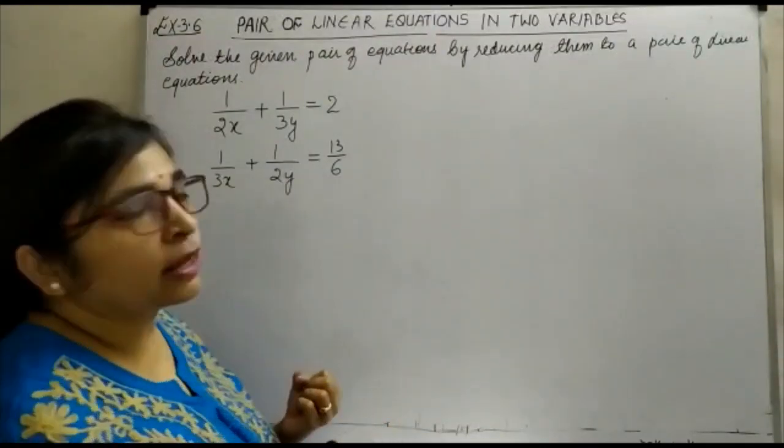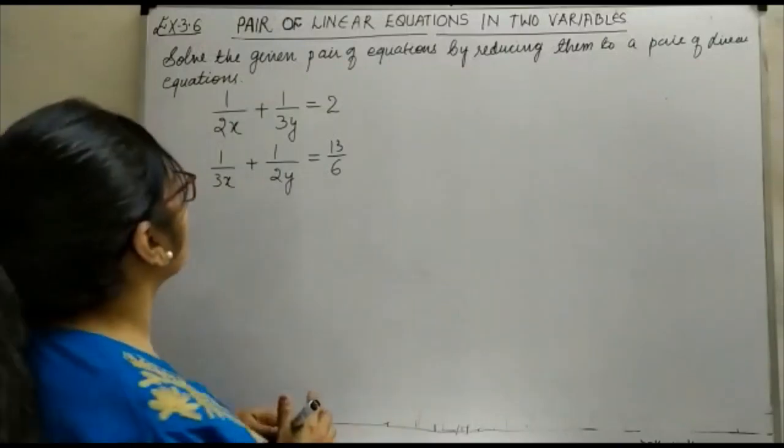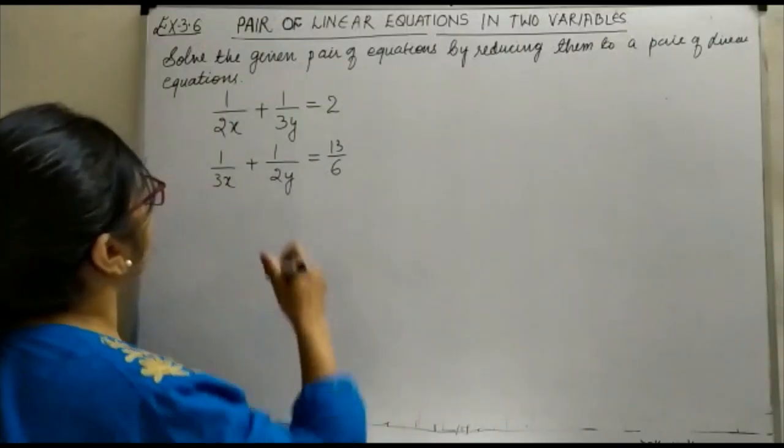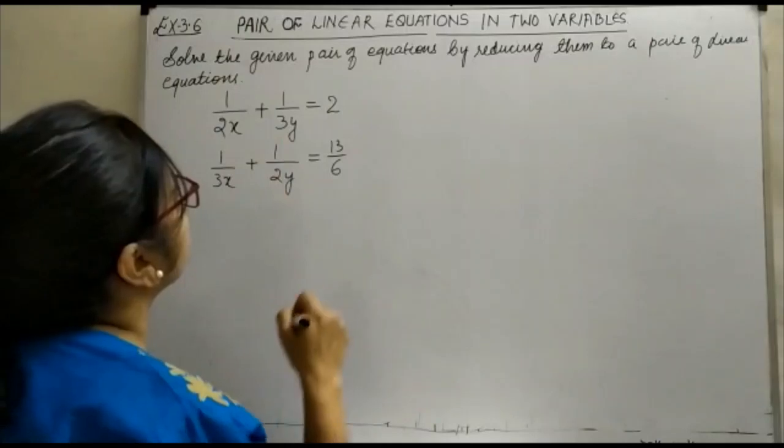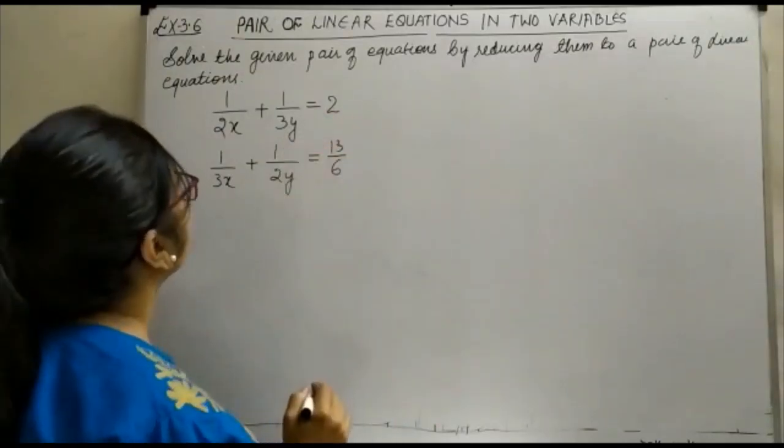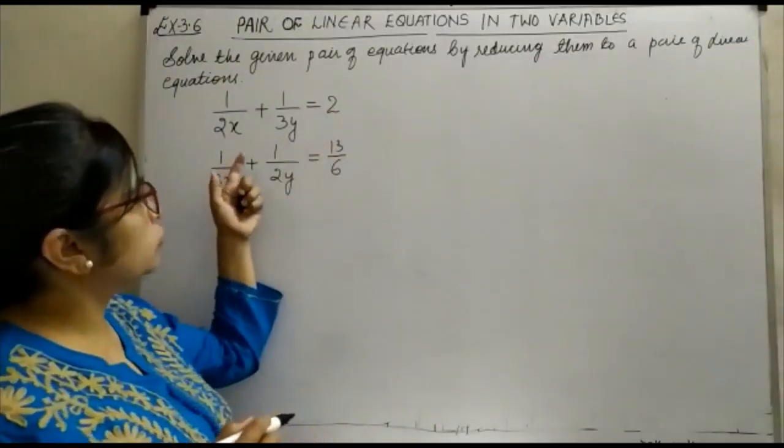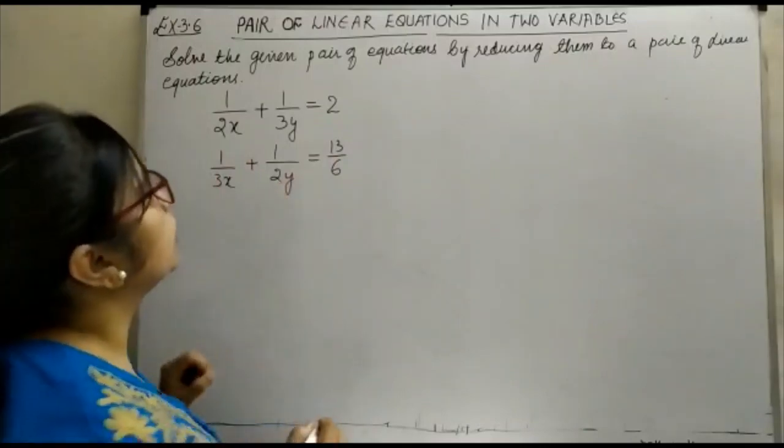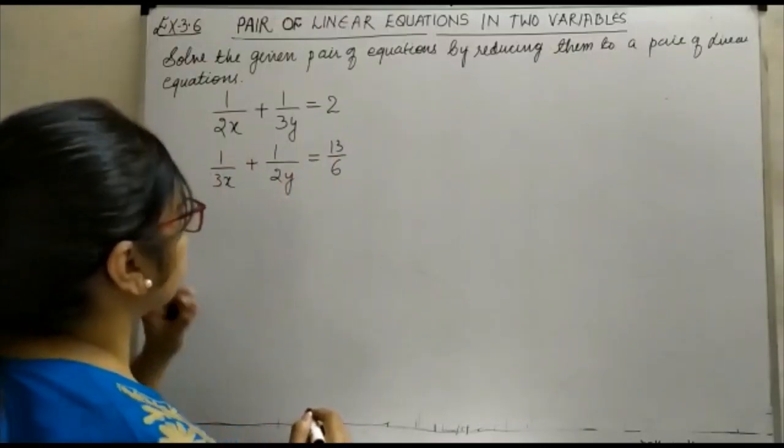Let us see how these can be reduced with the help of a question. Our question is 1 upon 2x plus 1 upon 3y is equal to 2, and 1 upon 3x plus 1 upon 2y is equal to 13 upon 6.